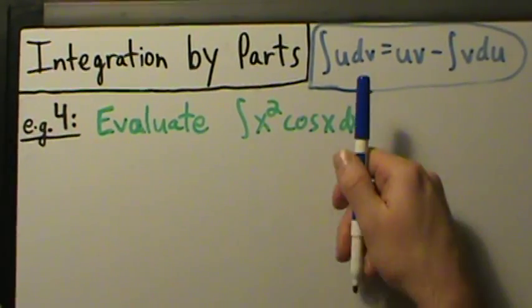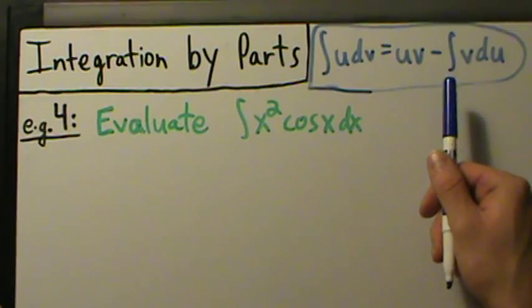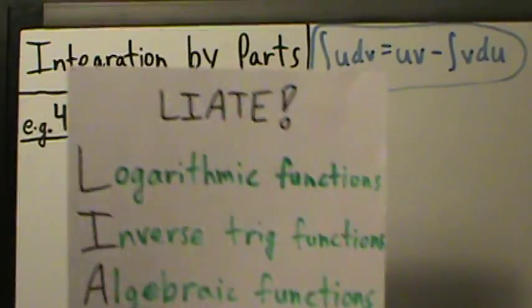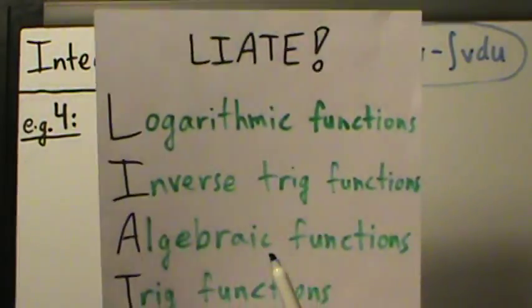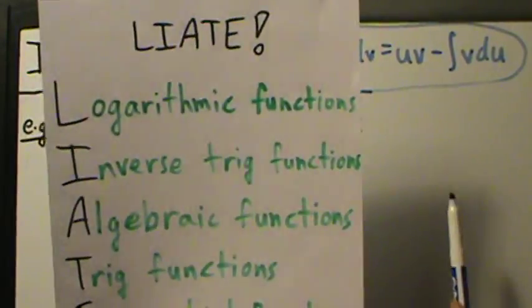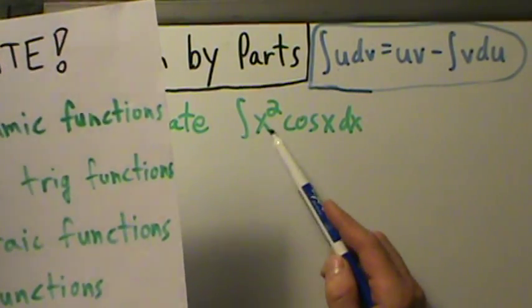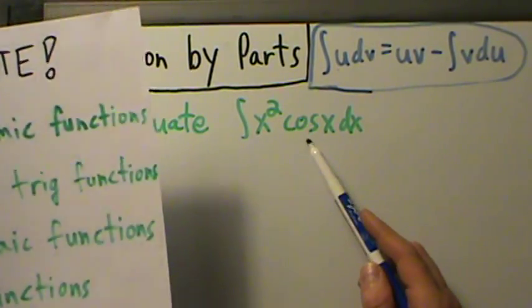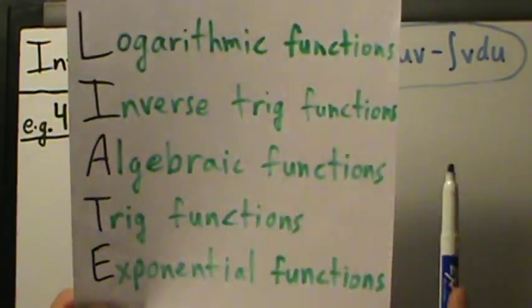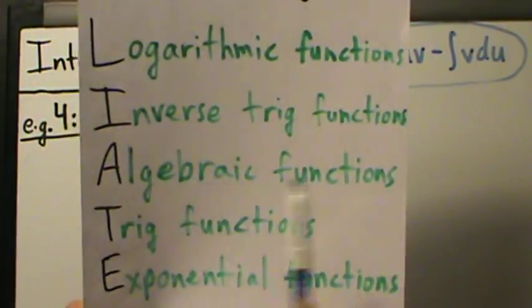The integral of u dv equals uv minus the integral of v du. We have to choose u using the LIATE rule — choose u to be the first type of function that appears on that list. We have x squared, which is an algebraic function, and cosine of x, which is a trig function. Algebraic appears higher than trig, so we choose u to be the algebraic function.